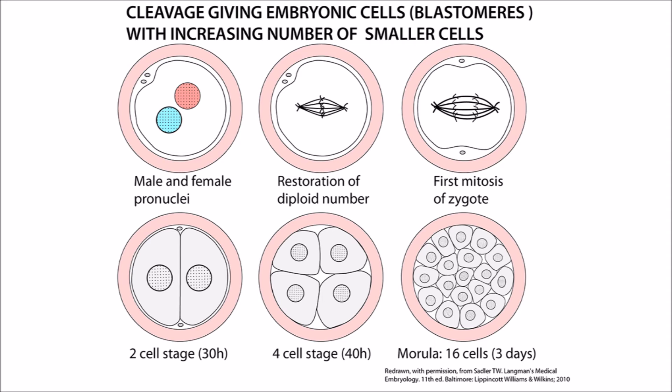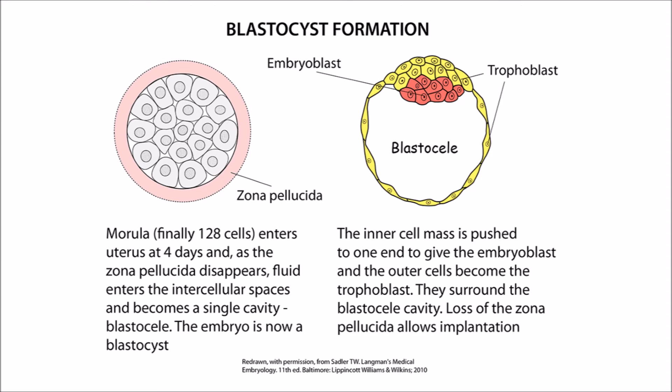At about four days, there are about 16 cells, and this structure is now called the morula. The cells within the morula keep dividing until there's finally 128 cells, and it's about this stage that the morula reaches the uterine cavity. As it does so, the zona pellucida begins to disappear and fluid enters the intercellular spaces, becoming a single cavity which we're going to call the blastocele. The embryo itself is now a blastocyst. The cells within this blastocyst are pushed towards one end of this blastocele, and the cells are now called an embryoblast, or an inner cell mass.